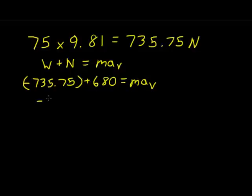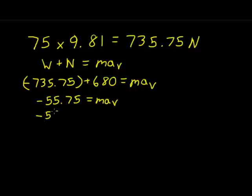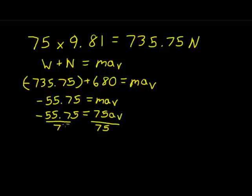The total net force found for this problem was negative 55.75 newtons, set equal to mass times acceleration in the vertical direction. We then divided negative 55.75 by the man's mass of 75 kilograms to get the vertical acceleration, which came out to be negative 0.743 m/s².